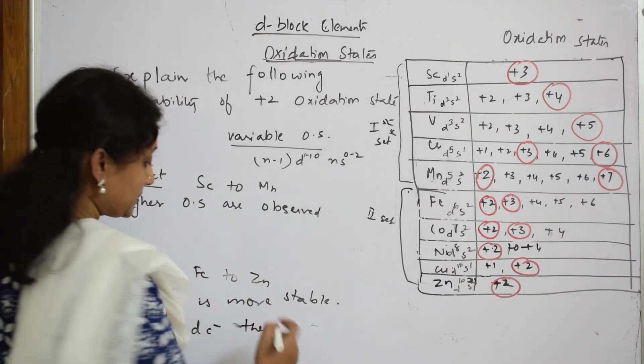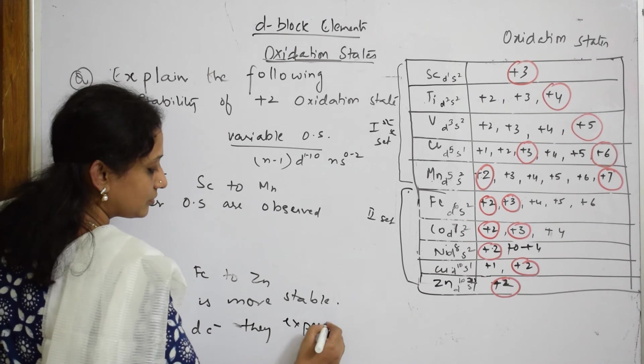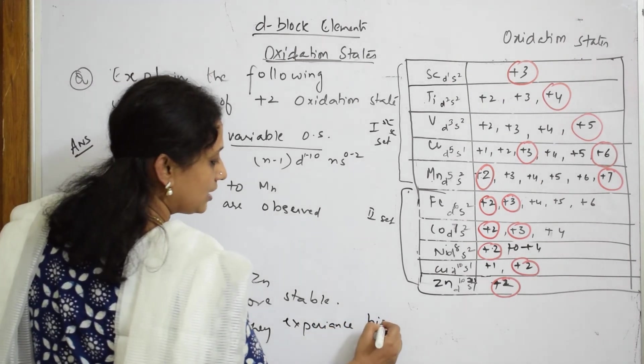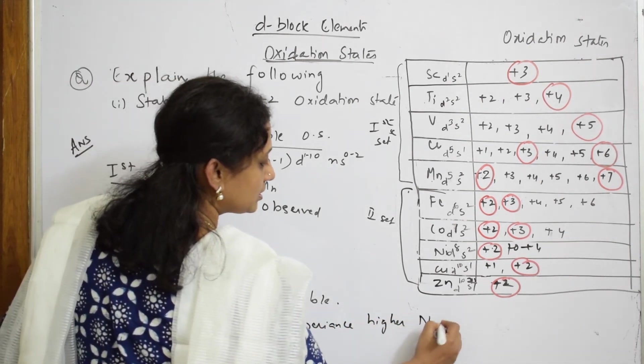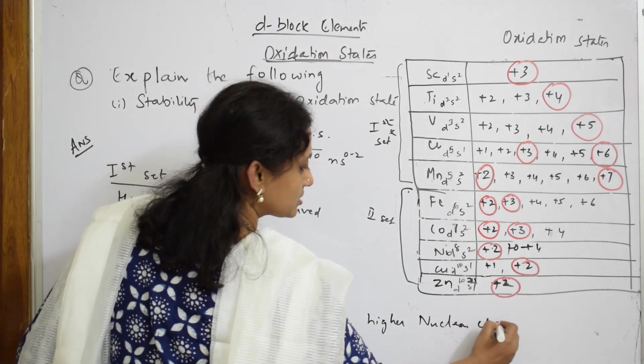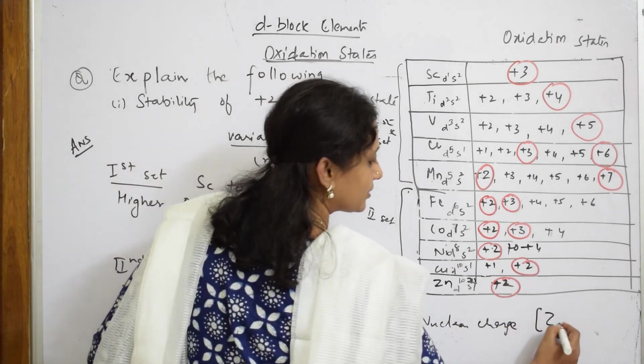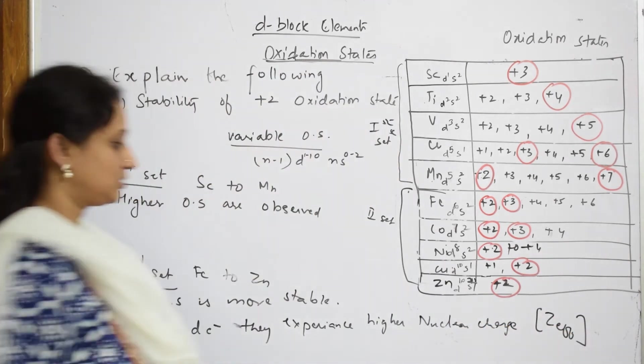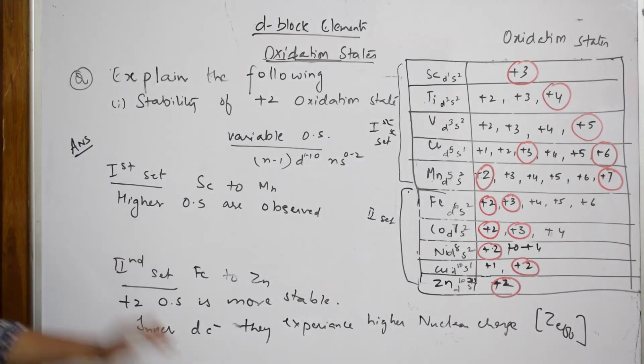Z effective is more high in the higher elements, and that's why it tries to prefer +2 state only. So more stable due to inner d electrons, and they experience higher nuclear charge. That is Z effective.